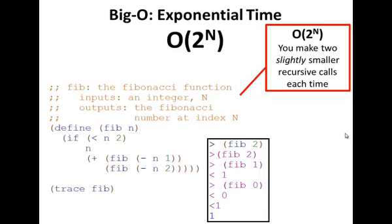Here's a call with Fib of two. Fib of two calls Fib of one, which returns one. It also calls Fib of zero, which returns zero. Eventually Fib of two returns one.